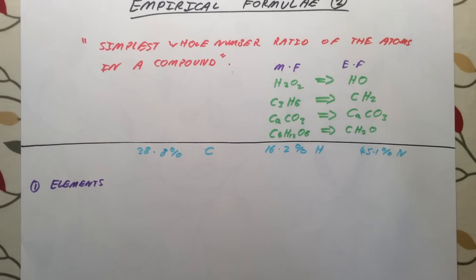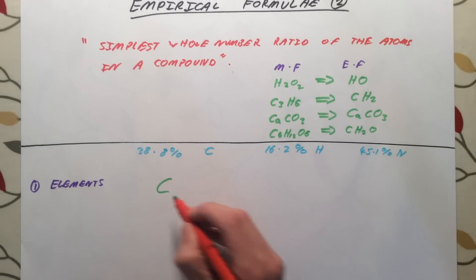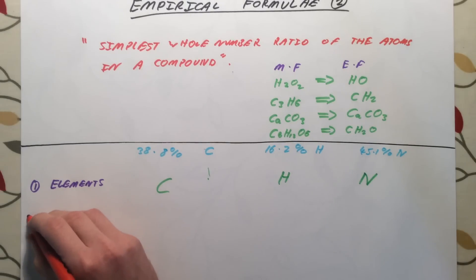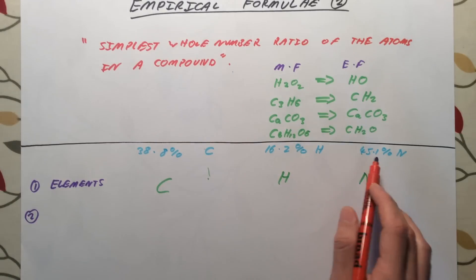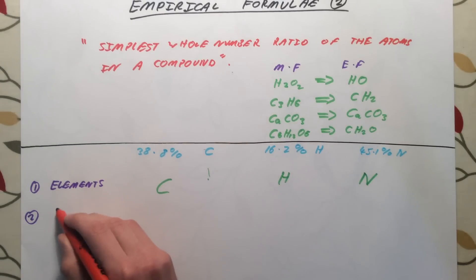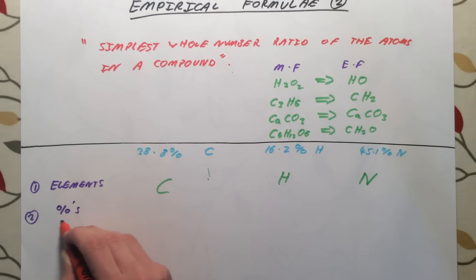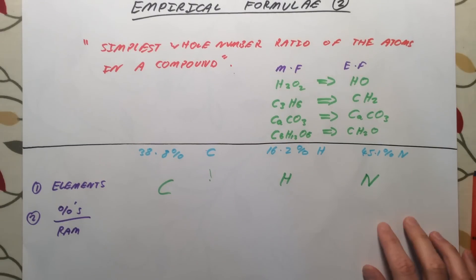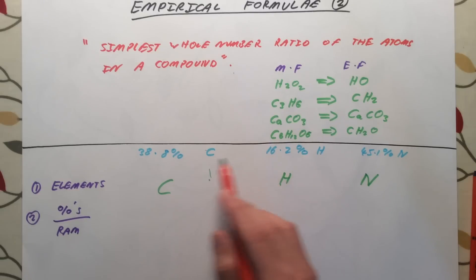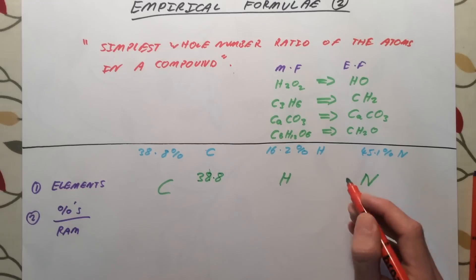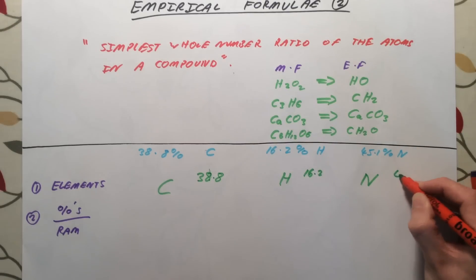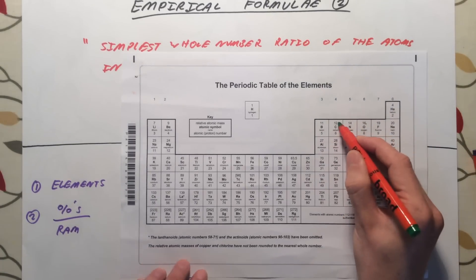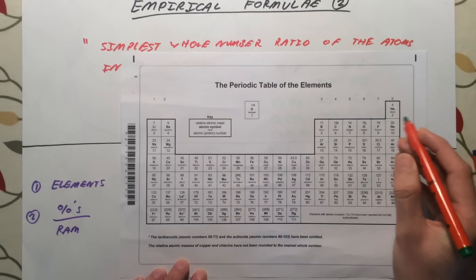The first step is to simply write out the elements contributing to the mass of this compound — in this case, carbon, hydrogen, and nitrogen. Next, we divide the percentages by the relative atomic mass of the atoms in question. The percentage of carbon is 38.8%, hydrogen is 16.2%, and nitrogen is 45.1%. The relative atomic mass of carbon is 12, hydrogen is 1, and nitrogen is 14.